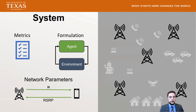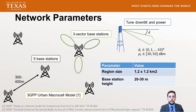Our network is defined by five base stations, each with three sectors, for a total of 15 different cells to optimize. This optimization is over the down tilts and transmit powers, where down tilts are from a discrete set and transmit powers can be anywhere between 30 and 50 dBm. We're using the urban macro cell model and an urban macro cell antenna radiation pattern to ensure a very realistic and applicable dataset.